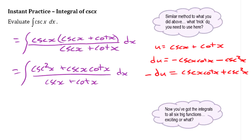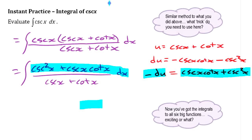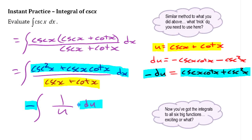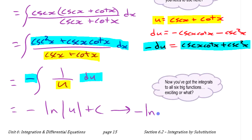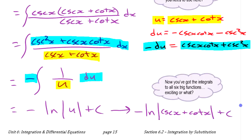Making all our replacements: everything on top becomes du, and the bottom is u. So we have the integral of one over u times negative du, which gives negative ln|u| plus a constant. Substituting back, the final answer is negative ln|cosecant x + cotangent x| + C. And that's it — you've now got the integrals of all six basic trig functions.